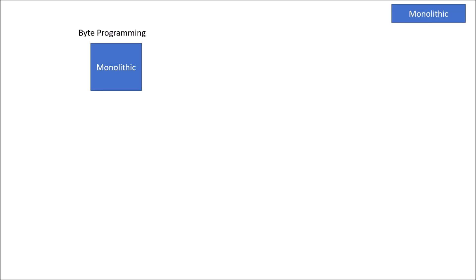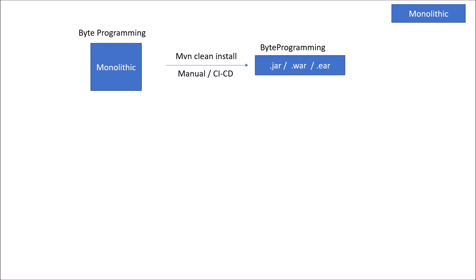Let's assume we have a Maven application called Byte Programming, and in order to make a deployable file of this application we would need to run MVN clean install. This could be triggered either manually or through a CI/CD pipeline. This will create a byte-programming.jar, .war, or .ear depending upon what you have mentioned in the pom.xml as a packaging.